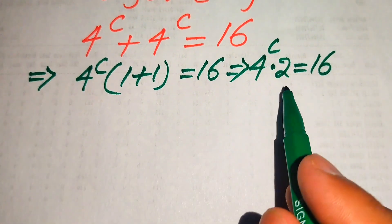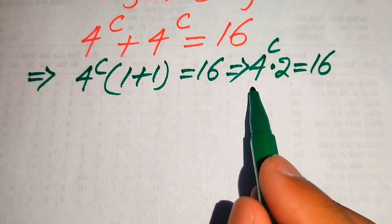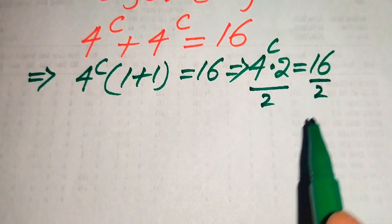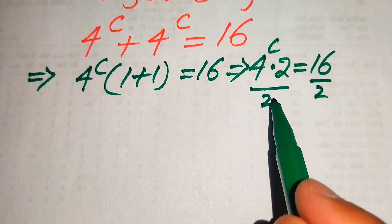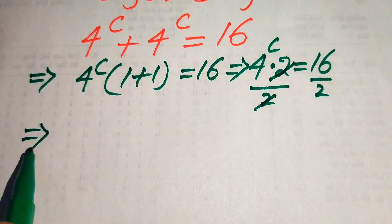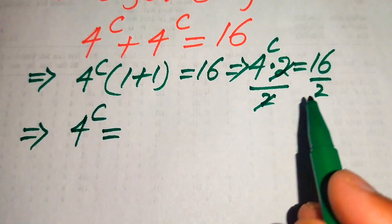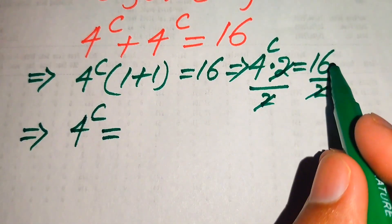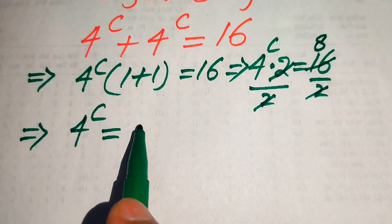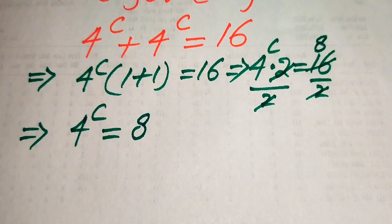Both of these terms are divisible by 2, so we divide both sides by 2. On the left-hand side, the 2 cancels, giving us 4 to the power of c. On the right-hand side, 16 divided by 2 gives us 8.